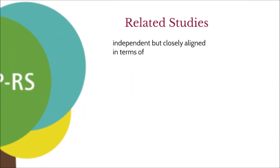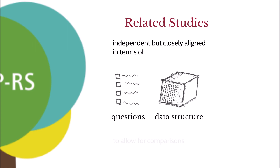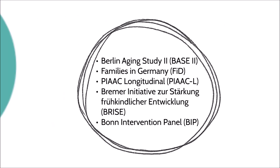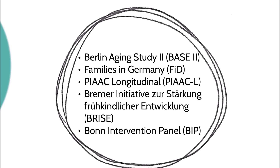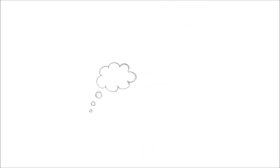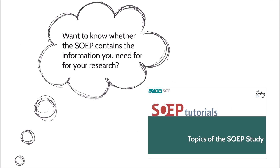Related studies are independent studies that are closely aligned to the SOEP to allow for comparisons with a representative sample. These studies frequently target a particular population group. For instance, the Berlin Aging Study 2 focuses on elderly people, and the study Families in Germany looks at particular types of families. If you're interested in the kind of topics which are covered by the study, you can find more information in our tutorial on the contents of the study.